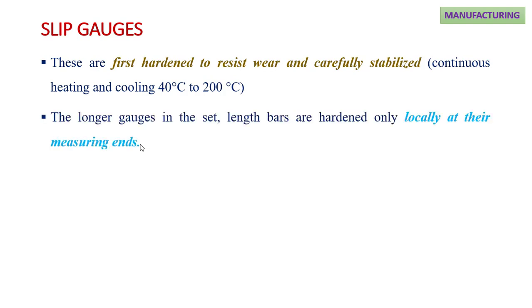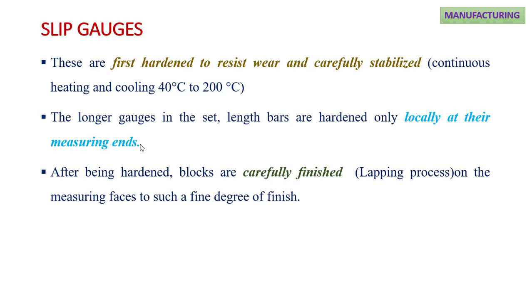The longer gauges in the set and length bars are hardened only locally at their measuring ends. After being hardened, blocks are carefully finished by the lapping process.